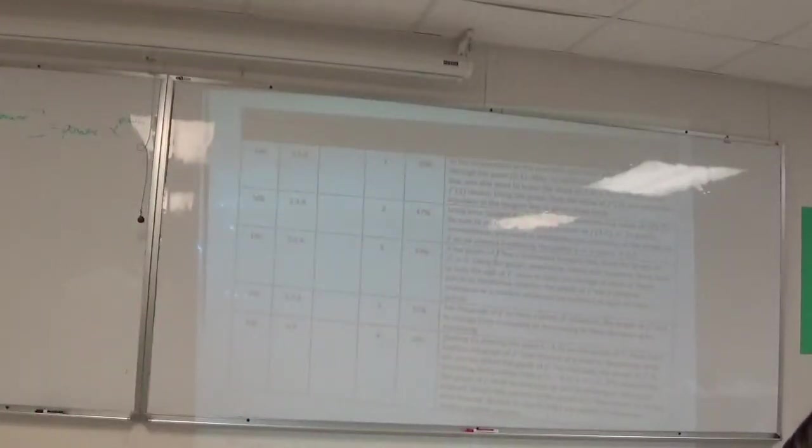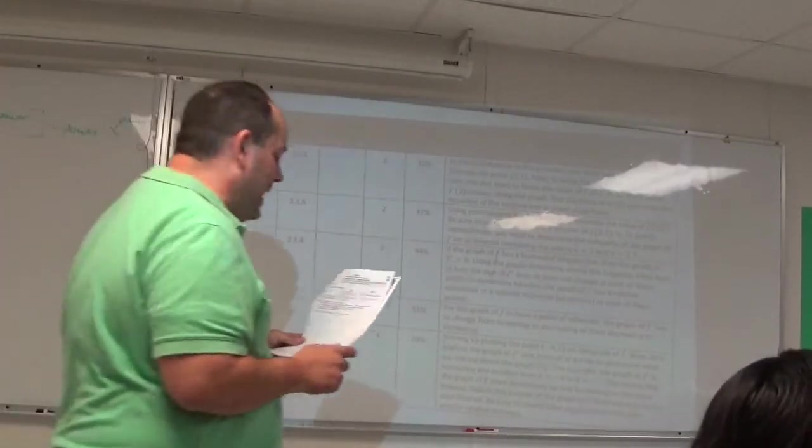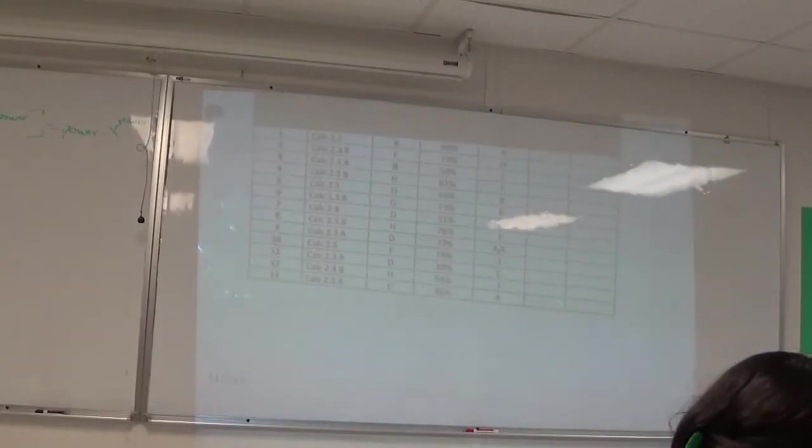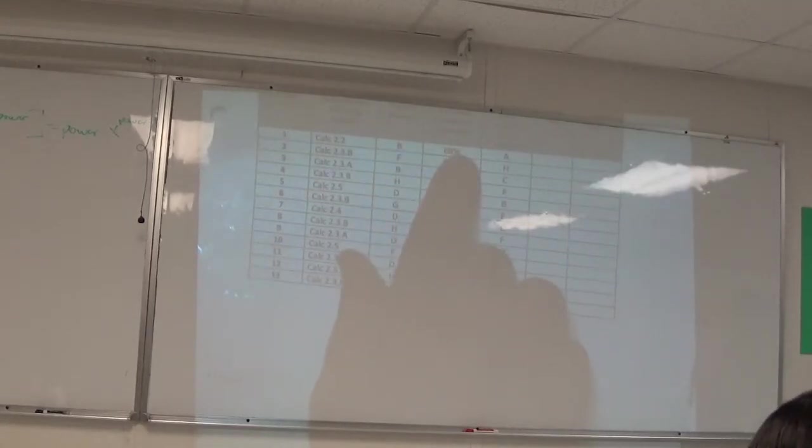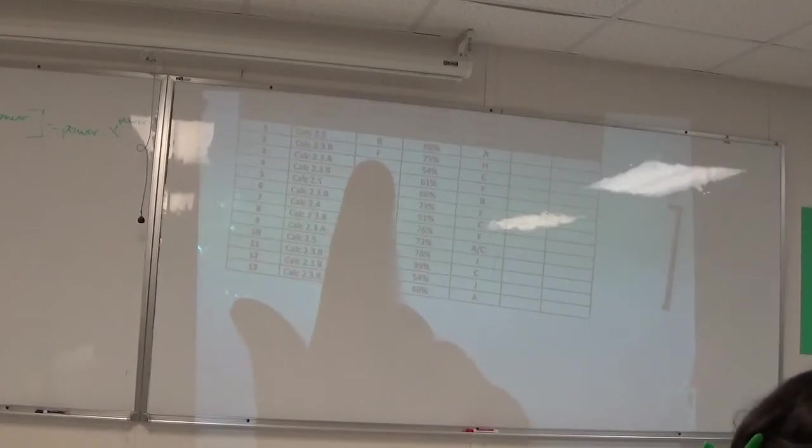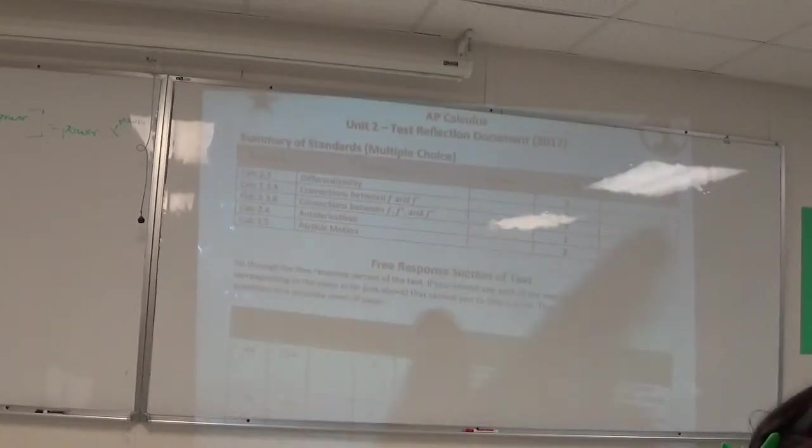Now, anyone who scored below a 75, and I'm not going to call your name out. I'm not going to publicly shame you in front of the Ohioans. We need to meet today at the beginning of lunch for a little bit. I want to talk about what your grade is and what your opportunities are to get this grade back to where you want it to be. I know there's a lot of emotions happening right now. What you're going to start working on now, and you're going to continue working on this weekend, corrections. The unit test corrections.